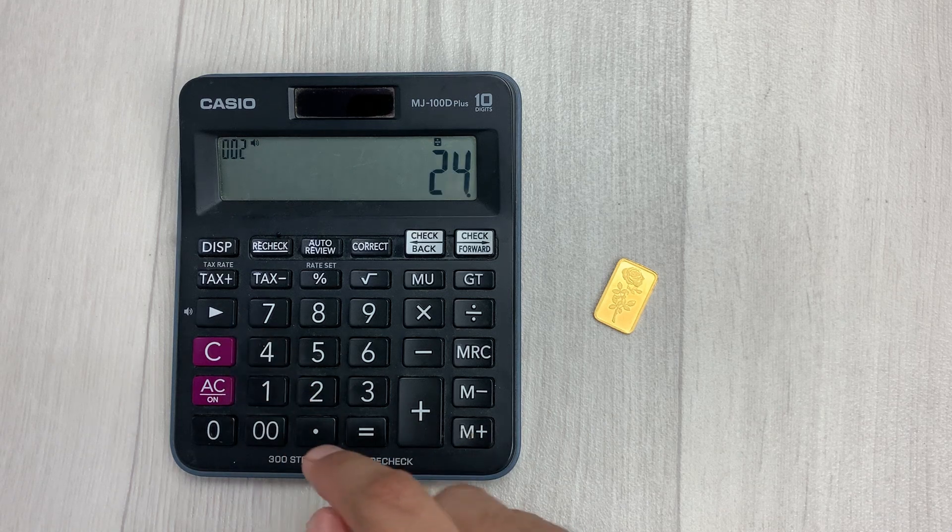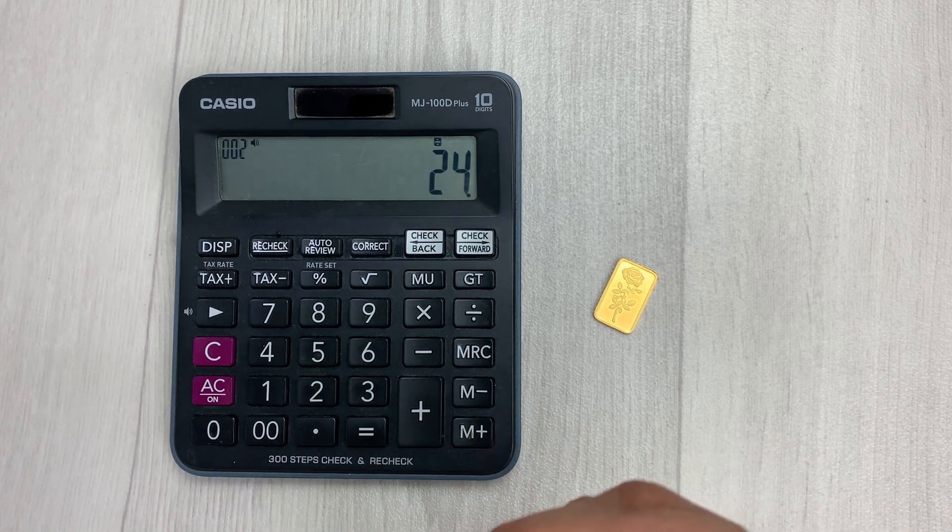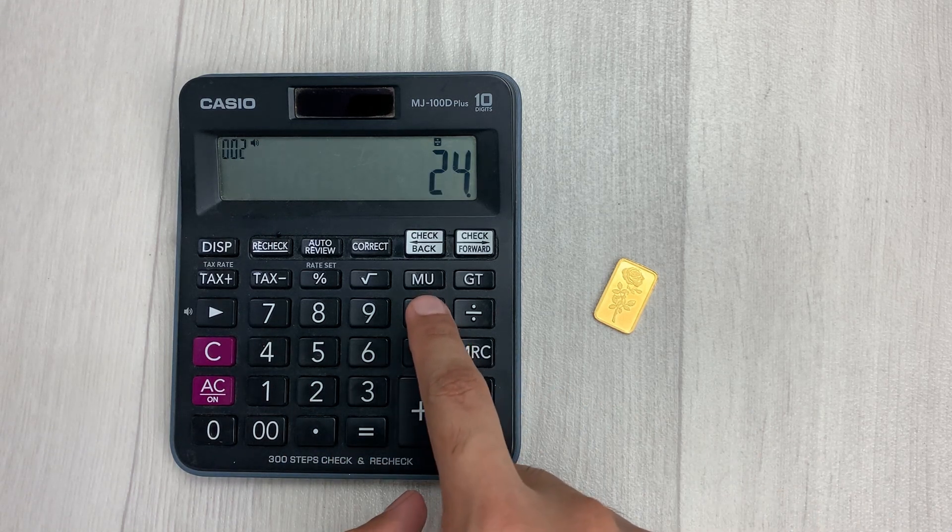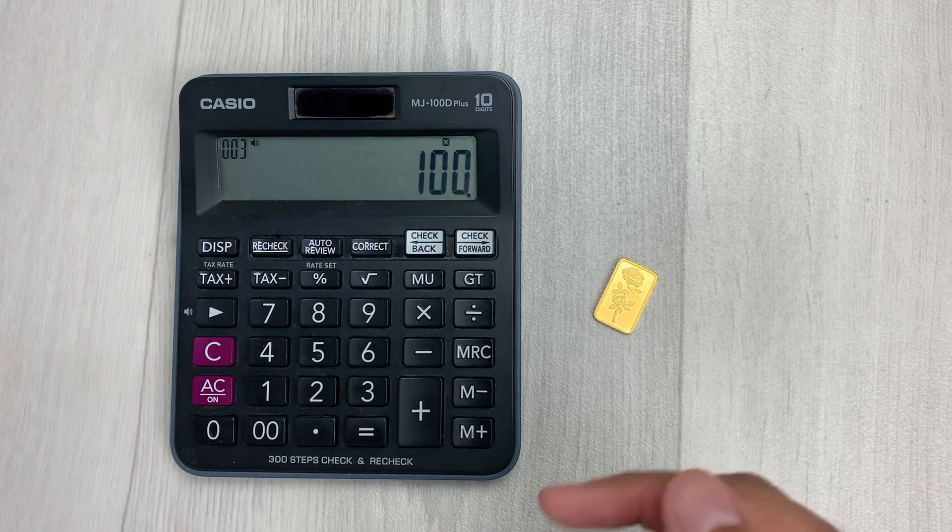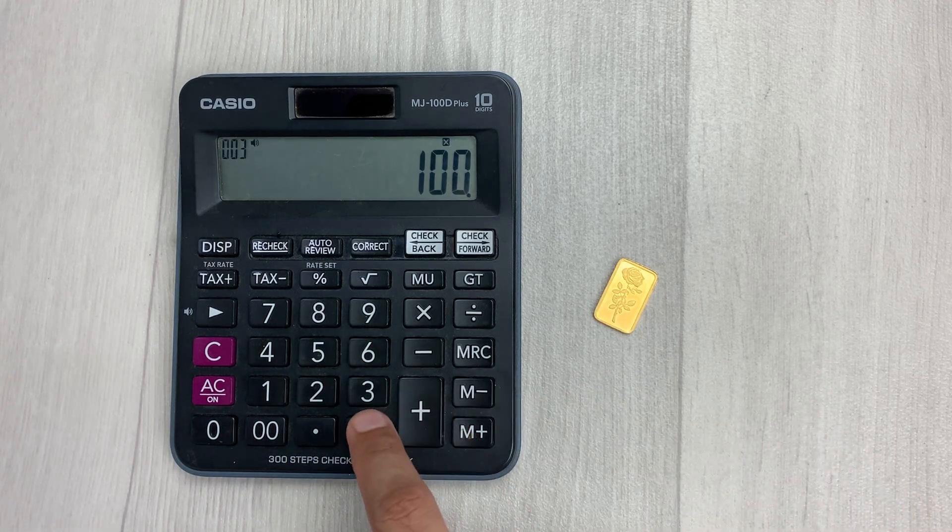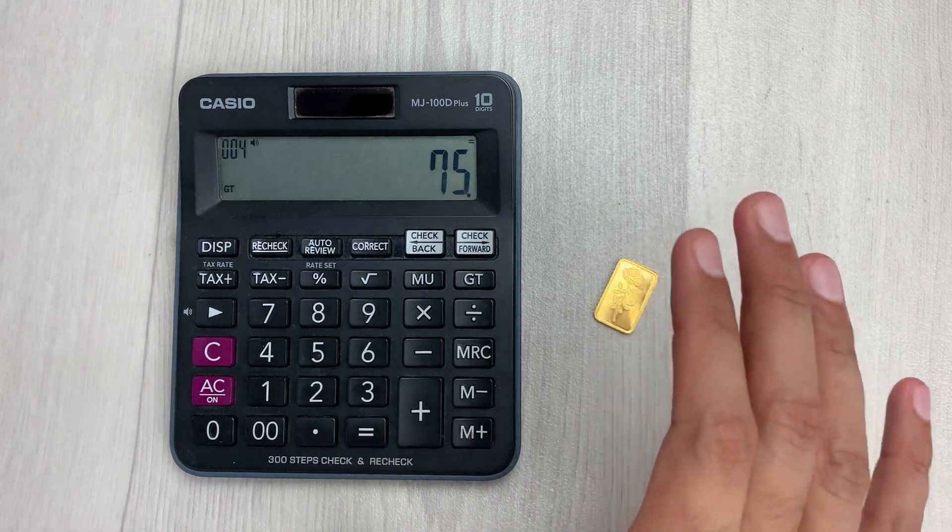Then you have to multiply it with 100. So I will press this multiply button and then I will type 100. And then in the last step, you have to press the equal button.